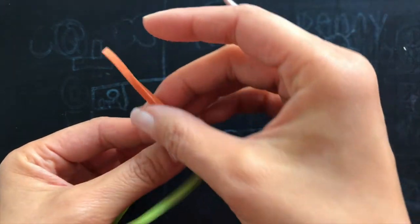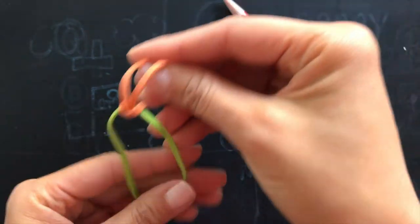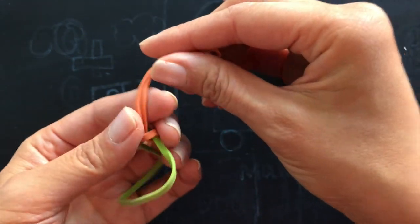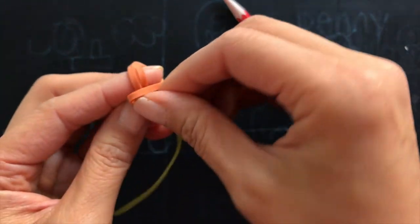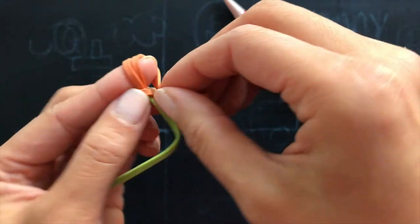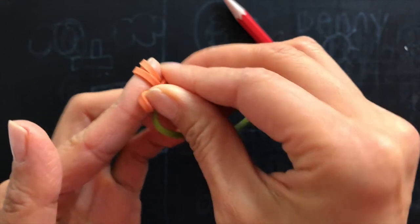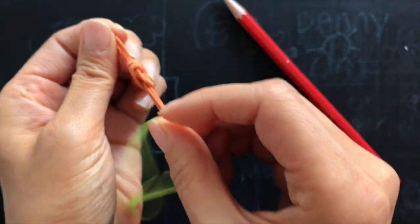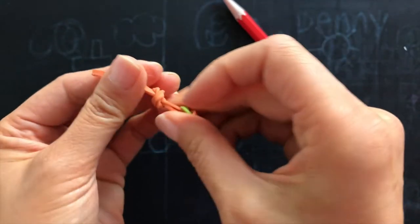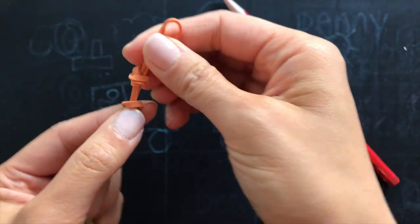I want to make one rubber band that holds the pencil tighter, so I will just make a knot one more time. Just go one time and pull it. Make it smaller.